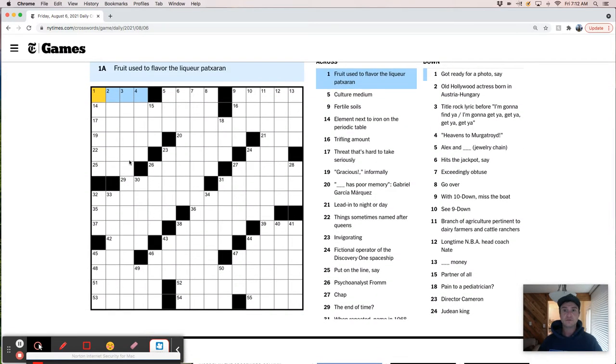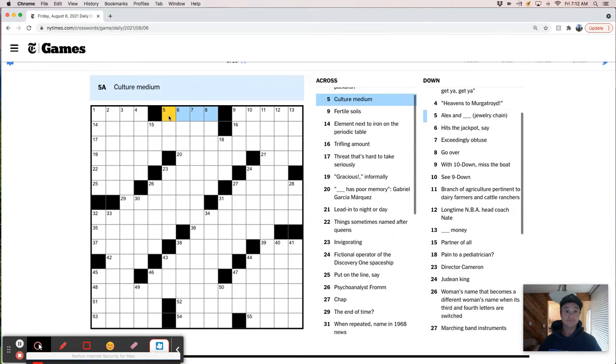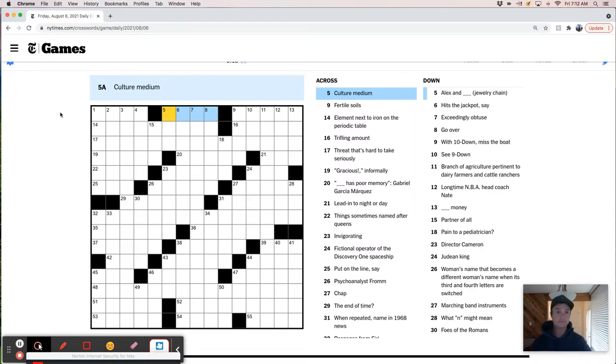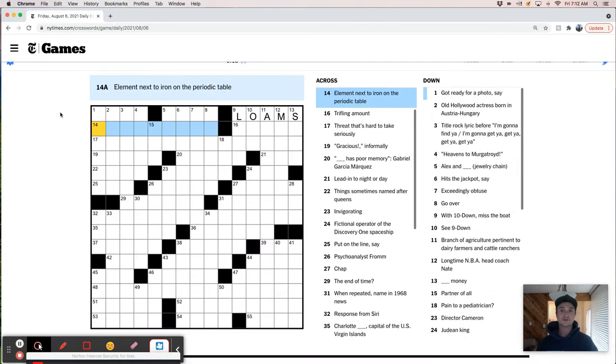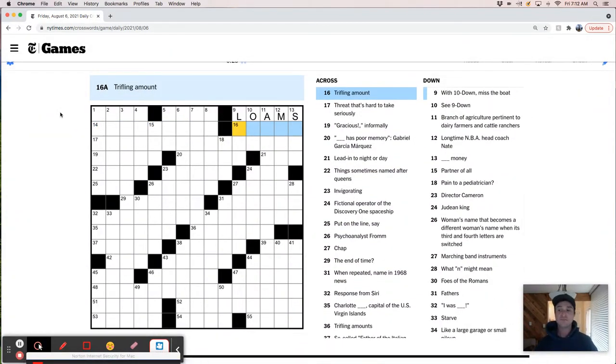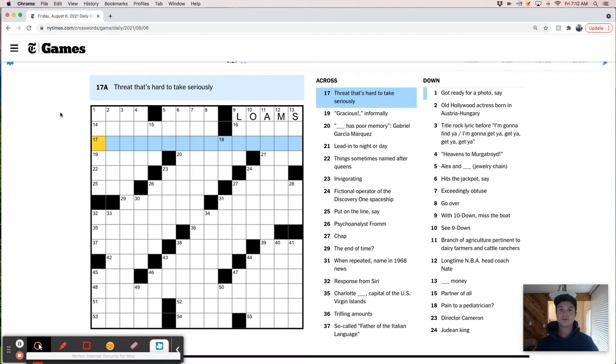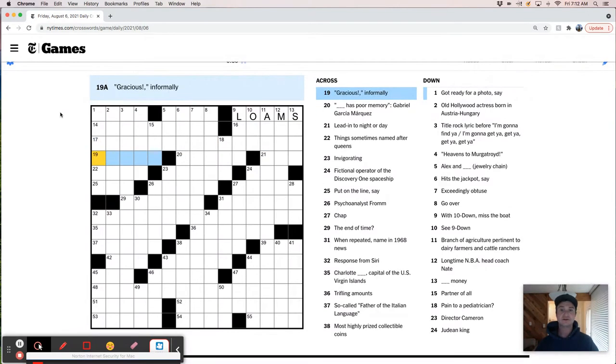Fruit used to flavor the liqueur Patrux... Pat... Patzaran. No idea. Culture medium. Fertile soils are loams. Element next to iron on the periodic table. My goodness, I have no idea. A trifling amount. Threat that's hard to take seriously. Gracias, yes, informally. Oh, gracious, pardon me. Gracious. Like, golly?